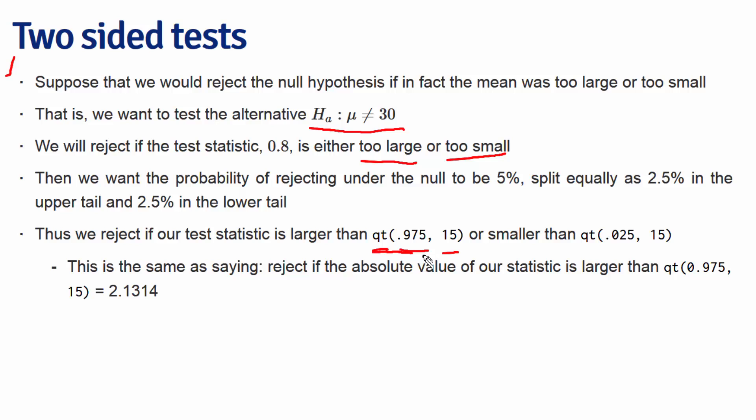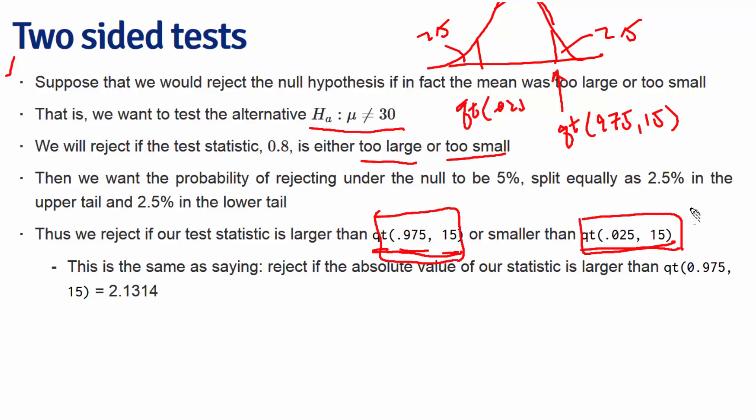And so we want to reject if our test statistic is larger than this. Let me draw an example of our t-distribution. This will be the point qt 0.975 with 15 degrees of freedom, with 2.5% in that tail. And this is the point qt 0.025 with 15 degrees of freedom, with 2.5% in that tail. So we're going to reject if our test statistic is larger than this, or smaller than this.